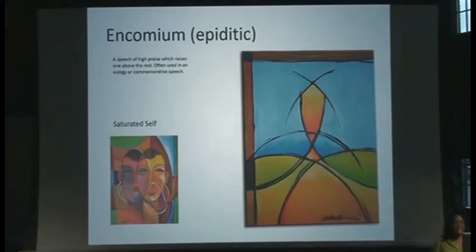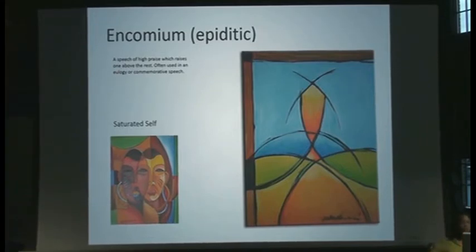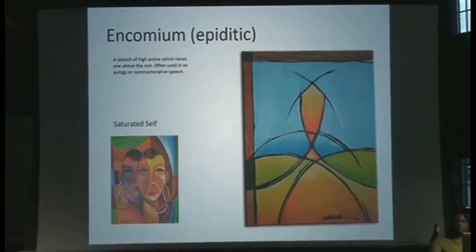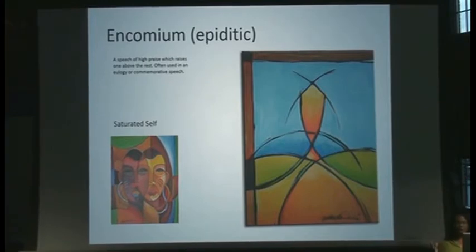And then one of my favorites, probably one of my first ones, is the encomia, or the epideictic. It's like a eulogy. So the people are represented by the red and the yellow, and it's being raised up above others, just like you would with a eulogy — you would give high praise to that one individual above all others.